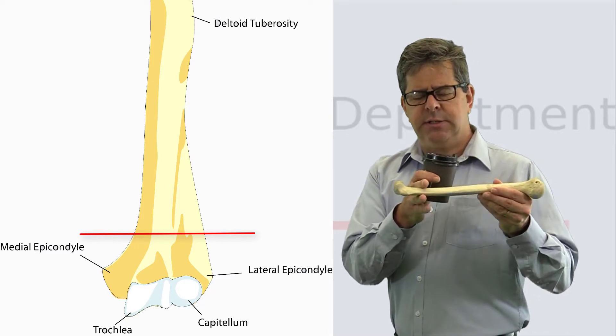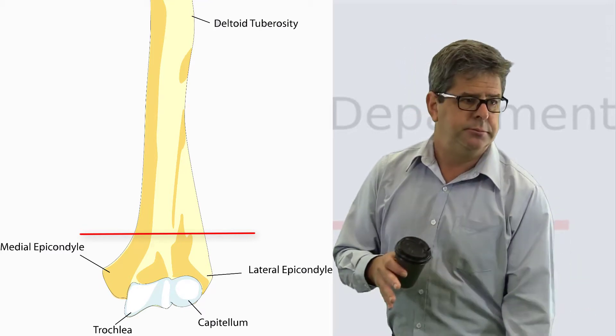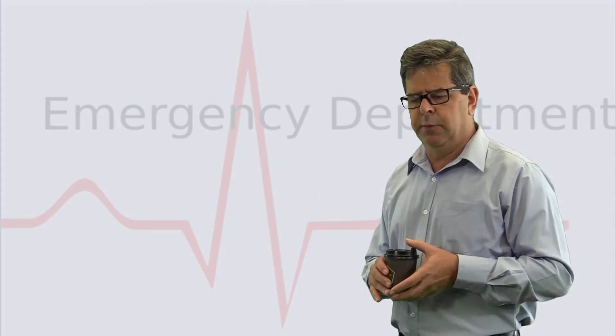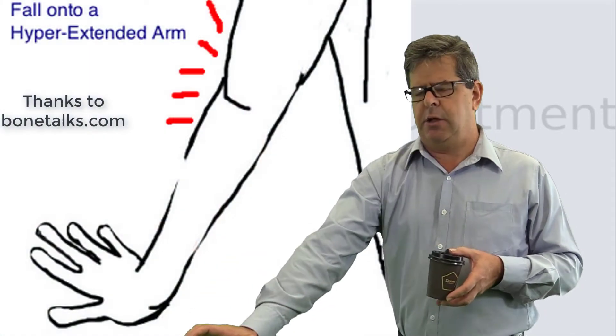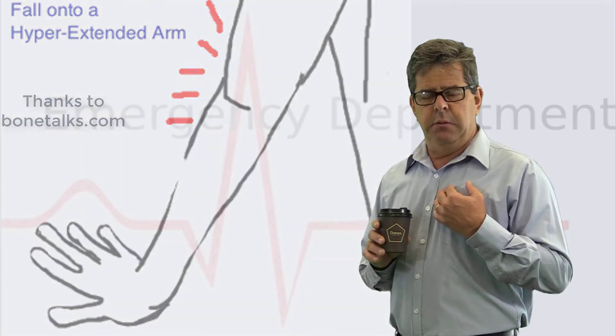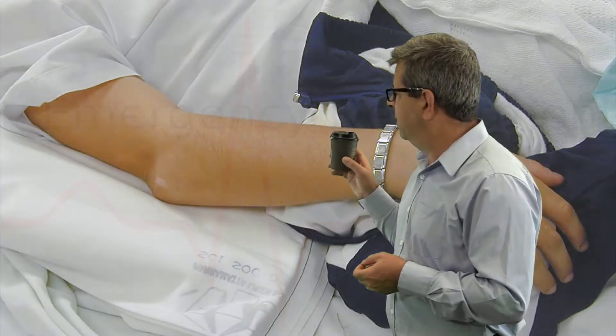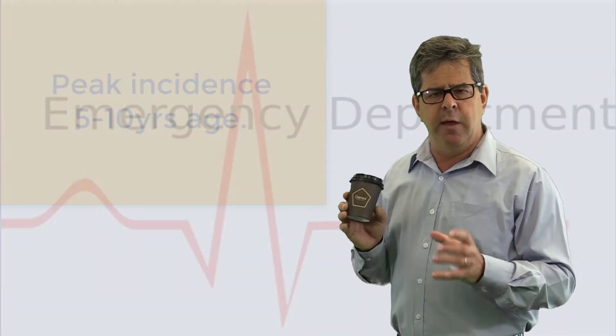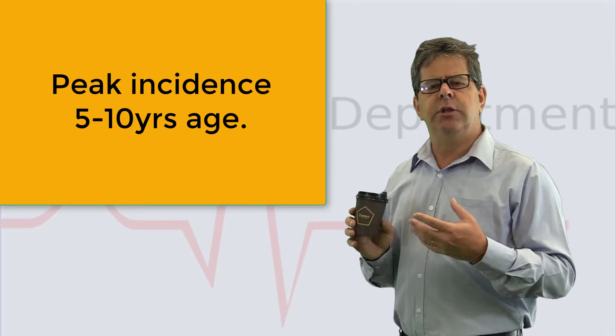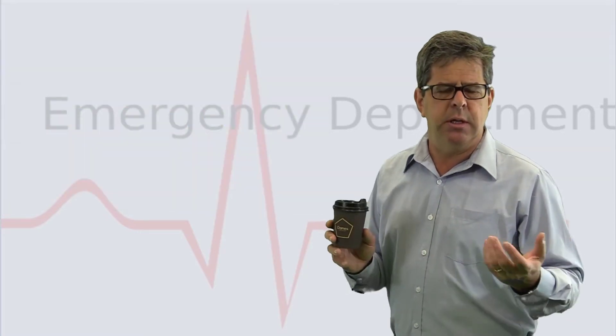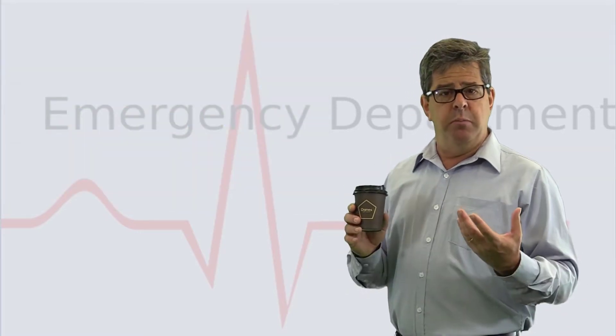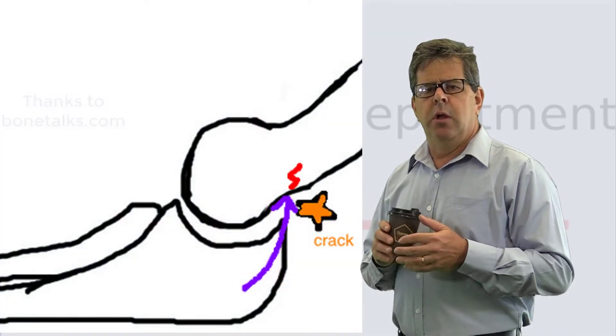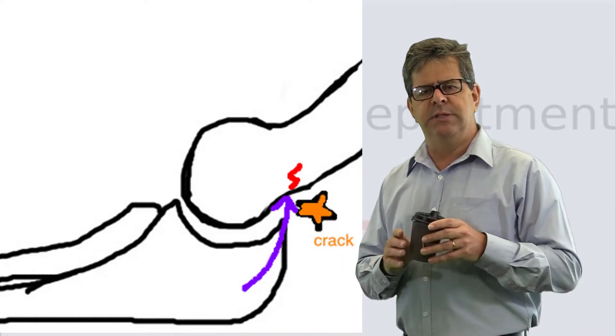How does it happen? It's a fall on the extended outstretched arm. In an adult I'd probably dislocate my elbow posteriorly, but in a child - and this tends to happen between five and ten year old children - the capsule and ligaments are much stronger so the bone breaks because the ligaments stay in position.